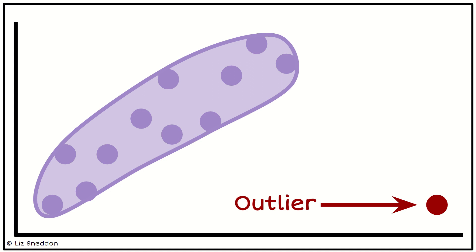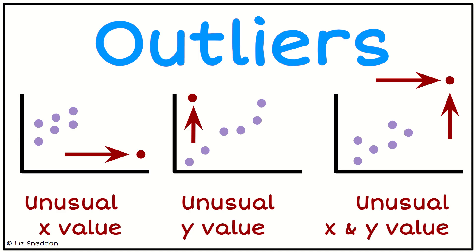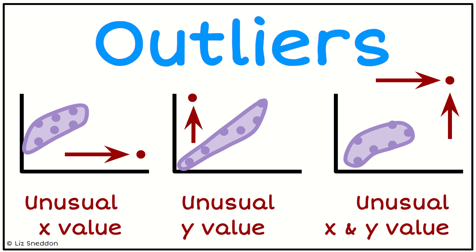There are three different types of outliers that we can look for. The first is when we have a pattern with an unusual x value, or horizontal value. The second option is where the y value is unusually high. The third type is where the outlier is both large in terms of its x and y values.